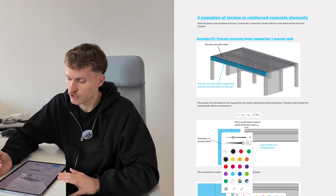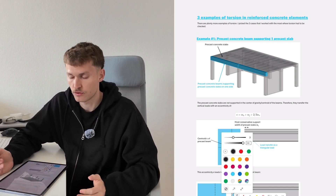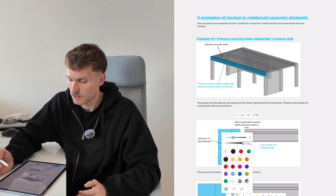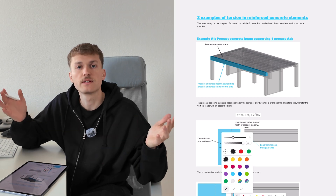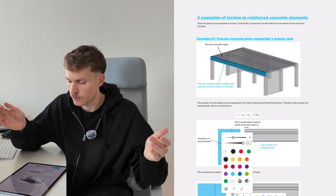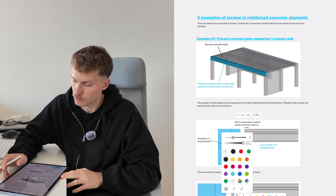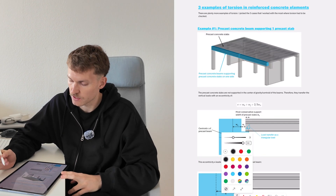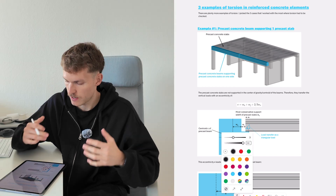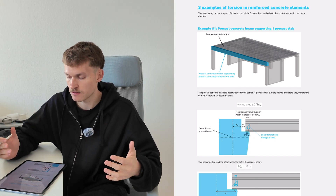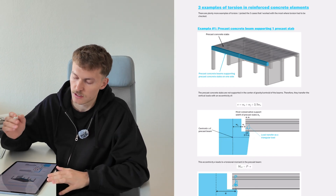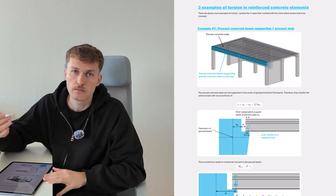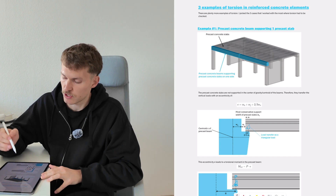So, three examples of torsion in reinforced concrete elements. There are plenty of examples where torsion needs to be considered. I picked three cases that I worked with the most, where torsion had to be checked.